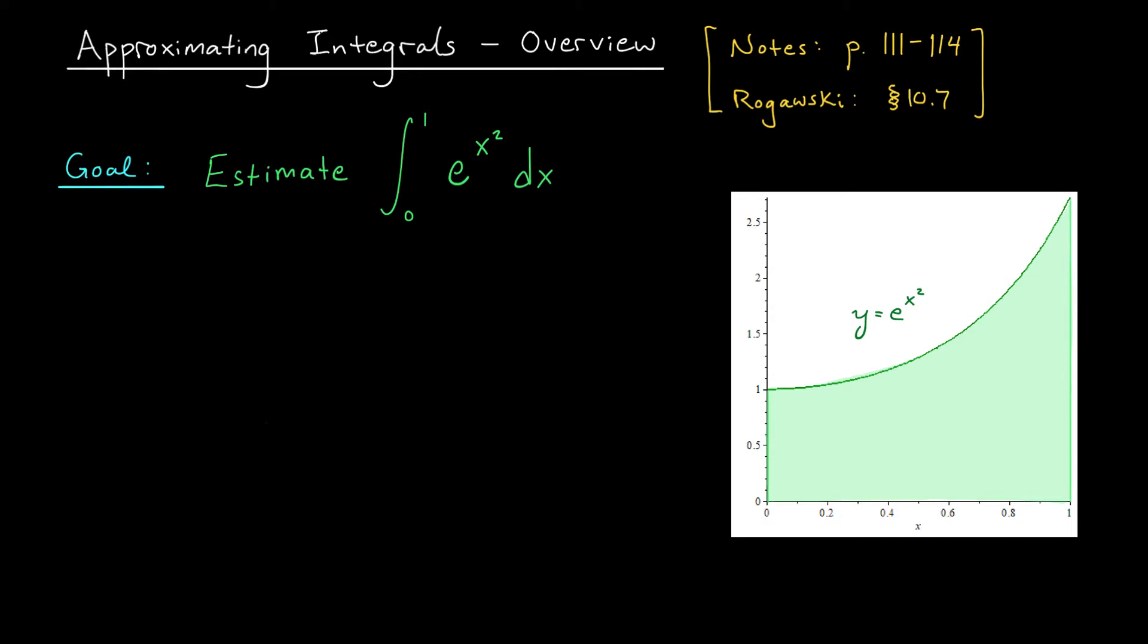The easiest way to get a Maclaurin polynomial for e to the x squared would be to start with the simpler expression e to the u. I'll let you check as an exercise that the quadratic Maclaurin polynomial of this function is given by 1 plus u plus u squared over 2. Here, I've chosen a quadratic arbitrarily. I just need something for the time being to estimate this integral. Of course, we also have a remainder term, which I'll denote by r2 of u.